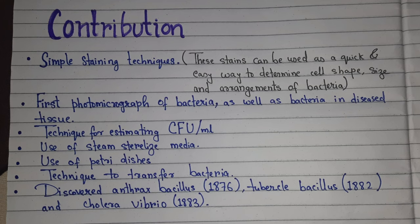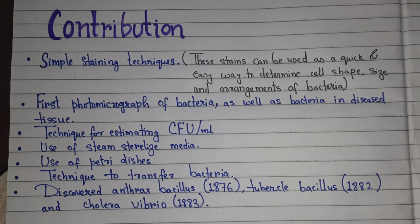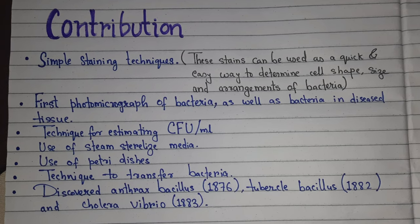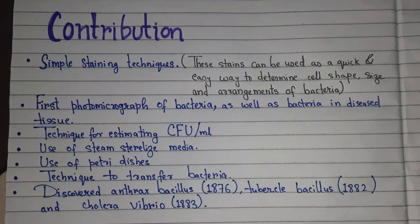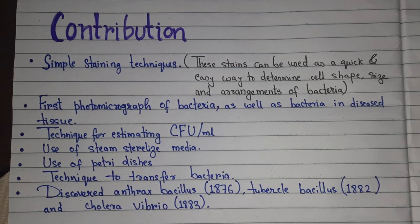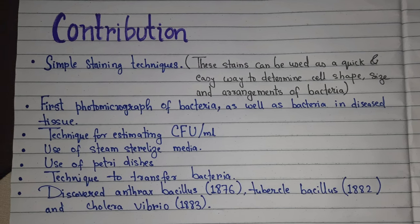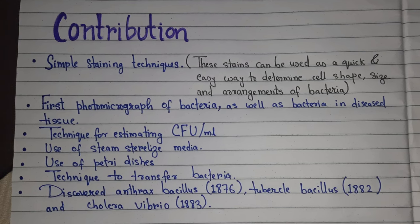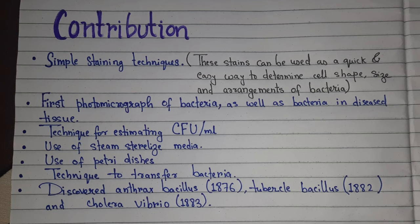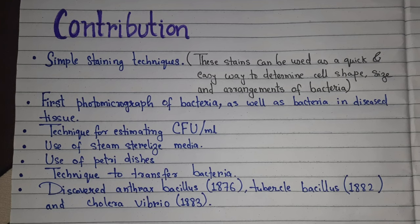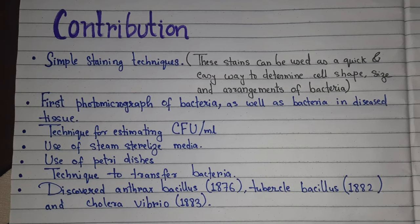Most importantly, he discovered the anthrax bacillus in 1876, the tubercle bacillus in 1882, and the cholera vibrio in 1883.